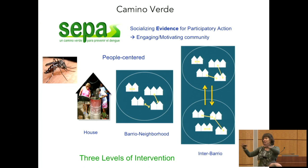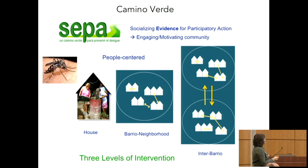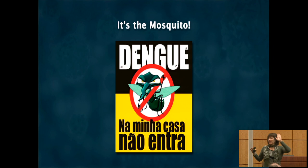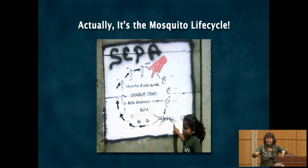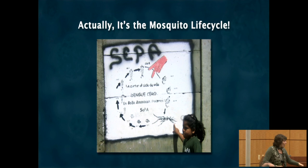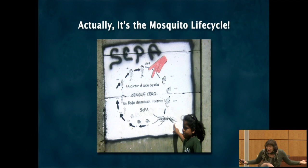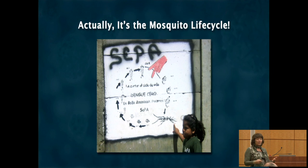The Aedes mosquito breeds in clean water around people's homes. All the issues around water management — intermittent pipe water, barrels, rainwater, poor garbage collection — these aspects of urbanization in tropical cities sit right on top of the dengue problem. Public health messaging tells people to dump out water, clean the water, get rid of the water — but no one mentions the mosquito. Why would you be motivated to scrub barrels if there's no clear logic explained to you?